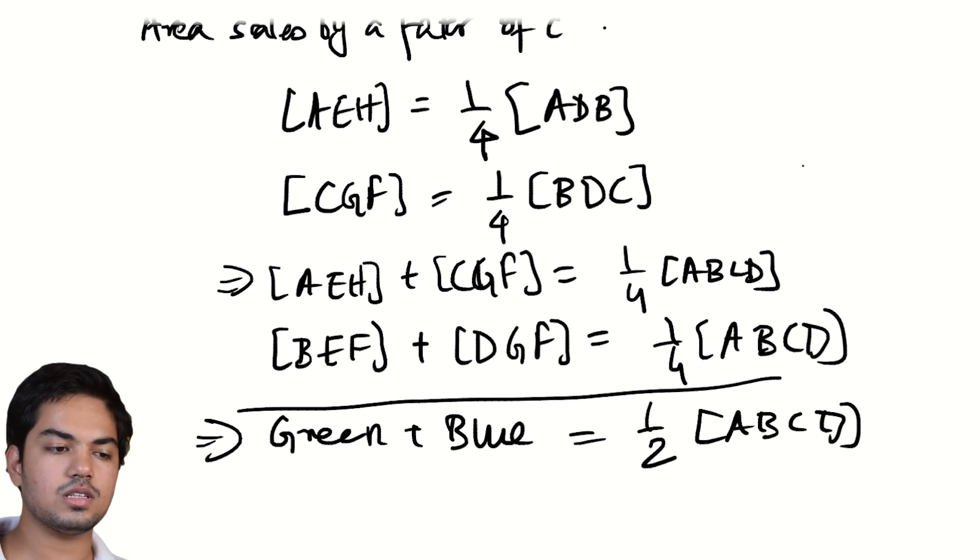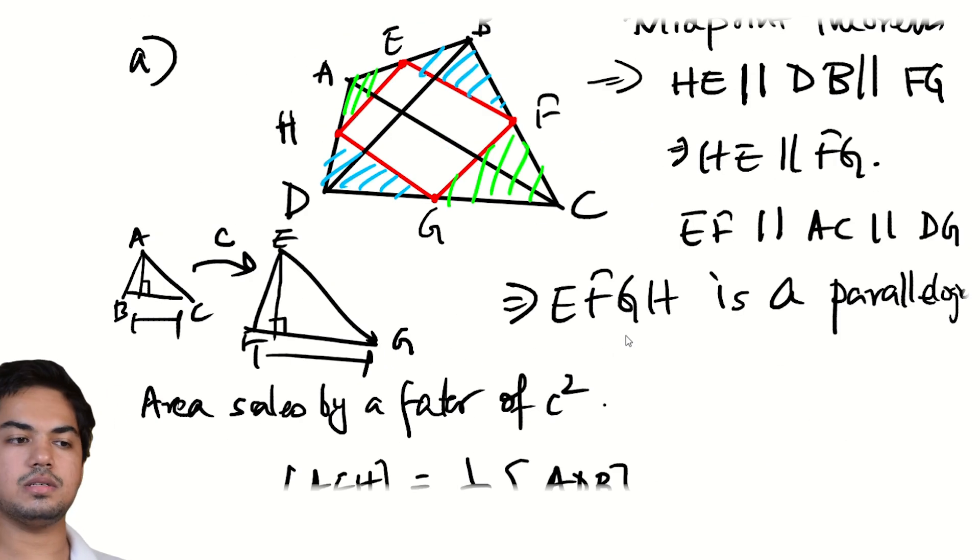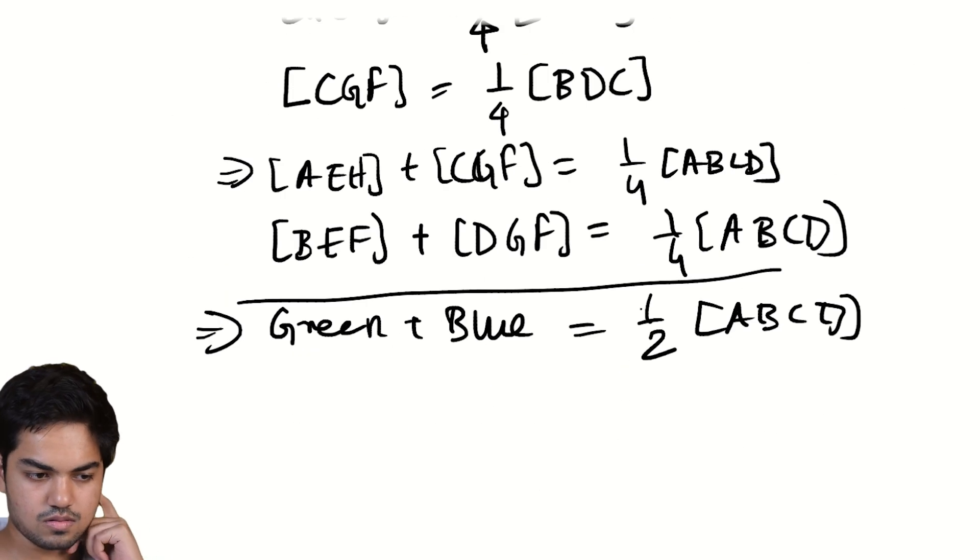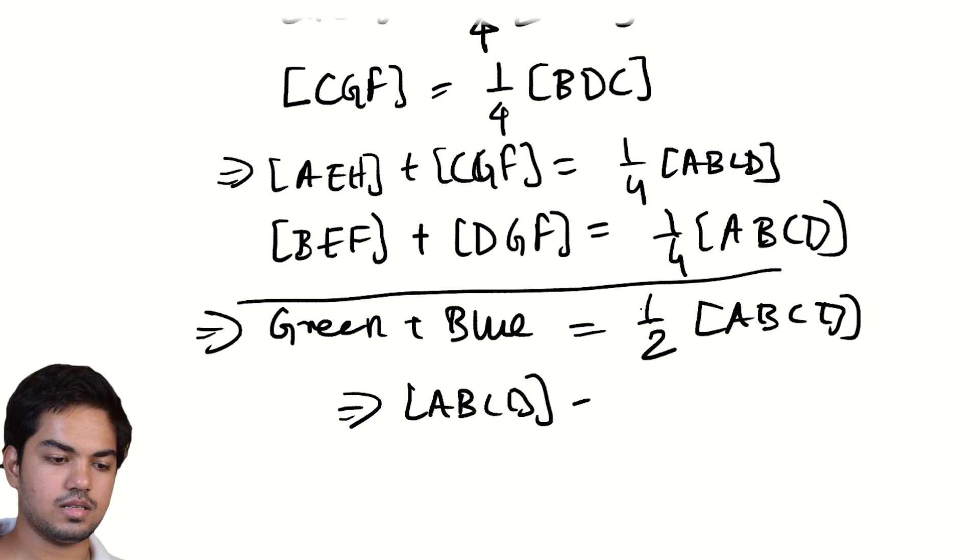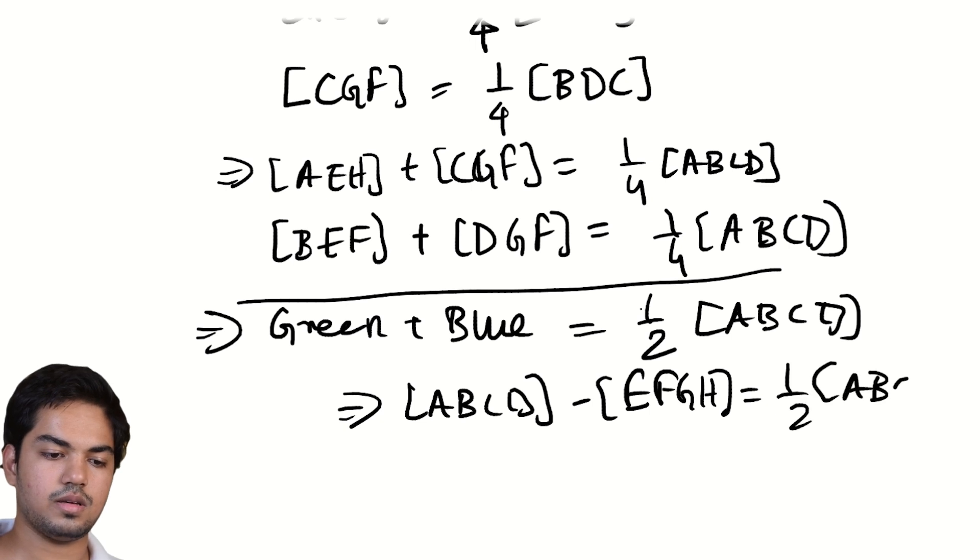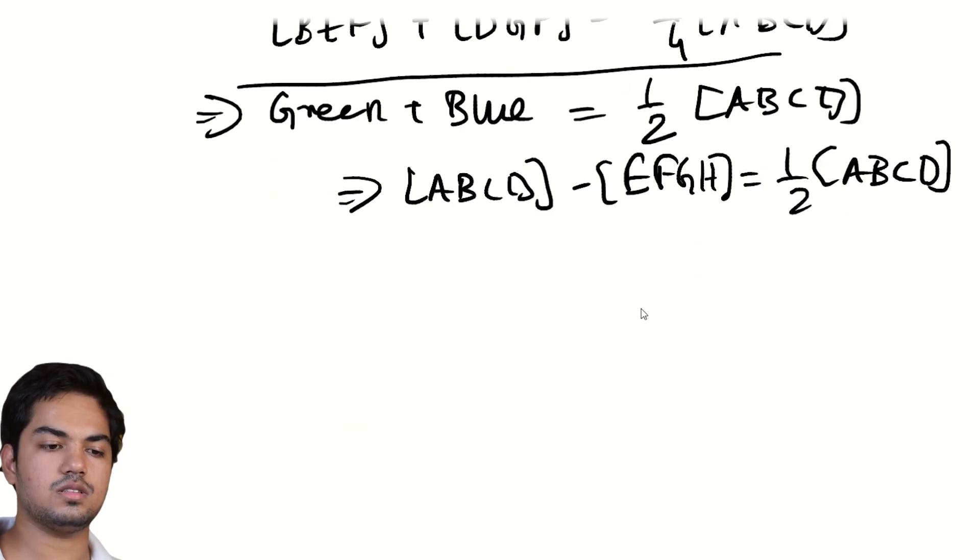But green plus blue regions are just the area of ABCD minus the area of EFGH. So this implies that area of ABCD minus area of EFGH is equal to half the area of ABCD. And hence, EFGH is half the area of ABCD. Very nice.